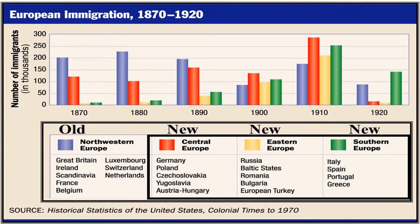This graph clearly illustrates the origins of European immigrants from 1870 to 1920. Between 1870 and 1890, most immigrants came from Northwestern Europe — they were Protestant, literate, skilled, and middle class, and assimilated easily into American life. Starting in 1900, most immigrants came from Southern and Eastern Europe. They were either Catholics or Jews, unskilled and poor. Forty percent returned home as birds of passage, taking the money they earned in American factories back to their homeland to purchase land.